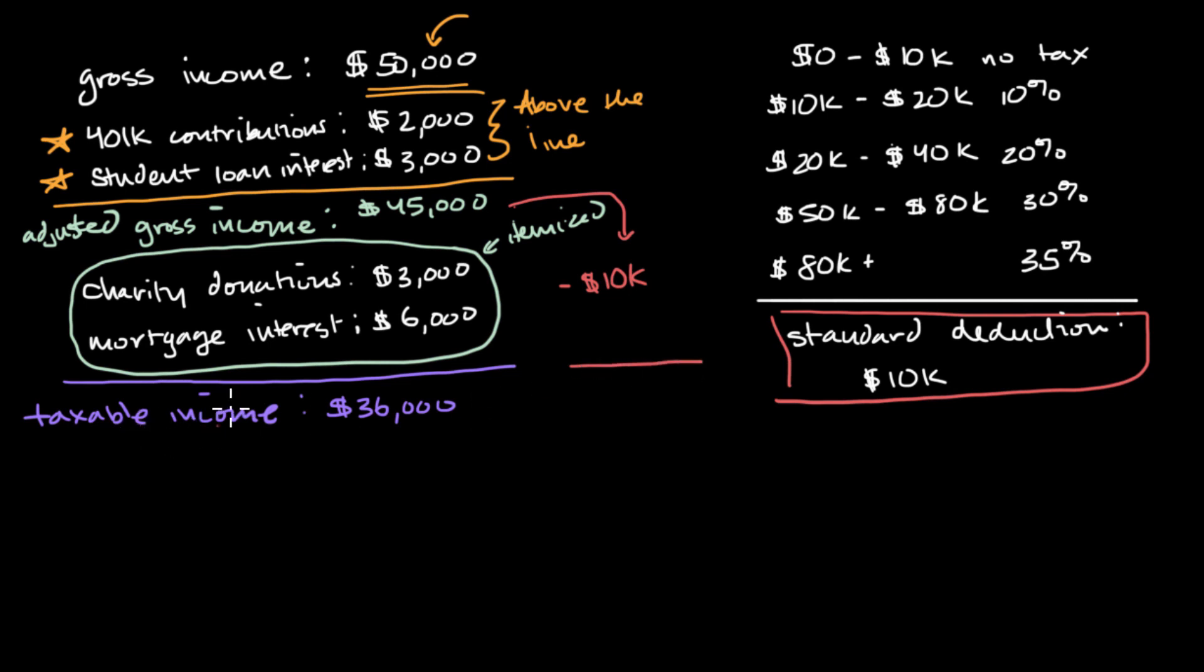Well, in that situation, our taxable income is going to be $45,000 minus $10,000, which is going to be $35,000. Now generally speaking, unless you just like giving money to the government, you want to minimize your taxable income. You want to do that legally. And in this situation, when we pick the standard deduction route, we actually have a lower taxable income. So this is the path that you are going to want to take.